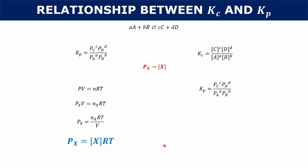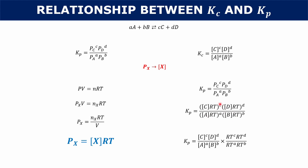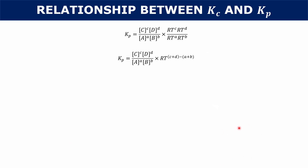We can use that by plugging it back into our initial Kp expression. If we replaced all those partial pressures with this relationship, we would have: the concentration of C times RT to the c, times the concentration of D times RT to the d, over the concentration of A times RT to the a, times the concentration of B times RT to the b. What we can do is separate the concentrations from all that RT stuff. Distributing the exponents, all that RT simplifies to RT to the quantity c plus d minus a plus b, because when you multiply you add exponents, and when you divide you subtract them.